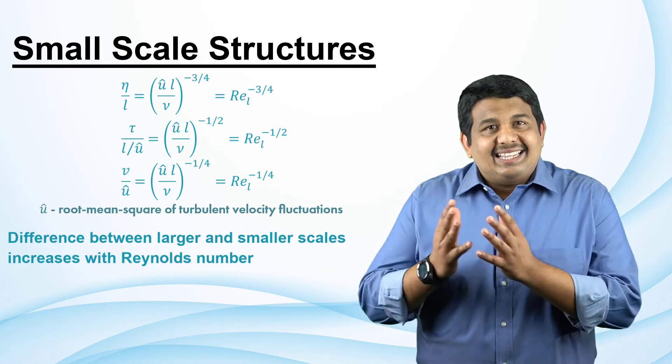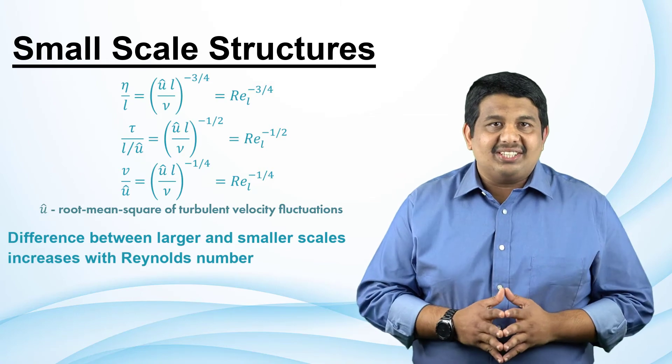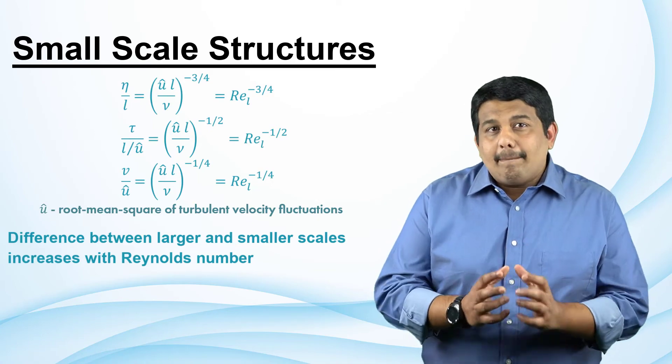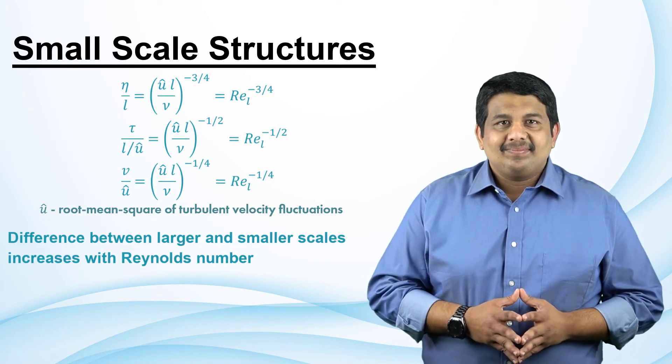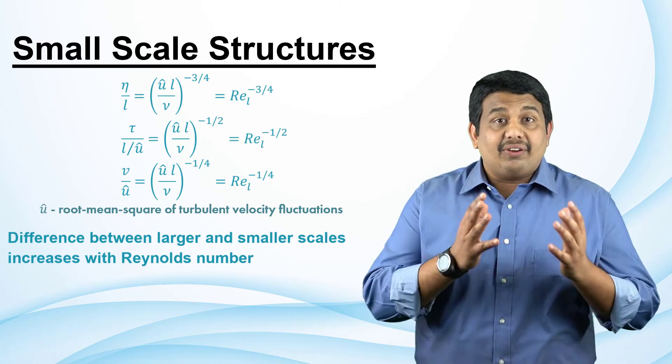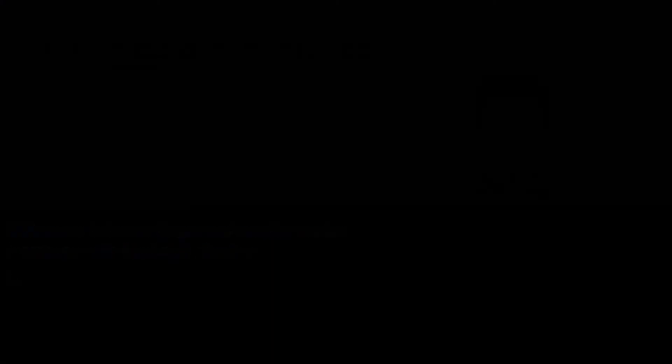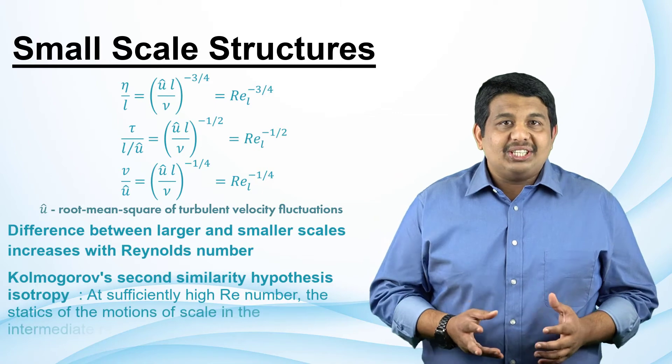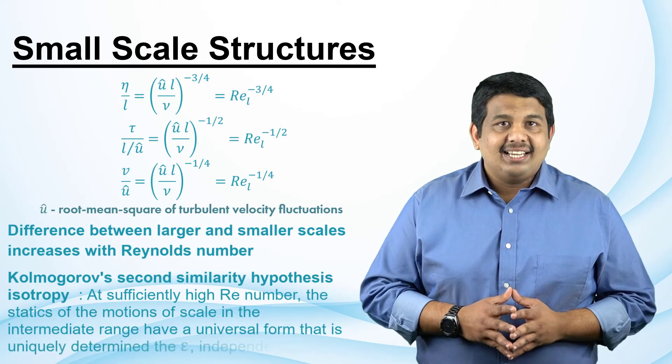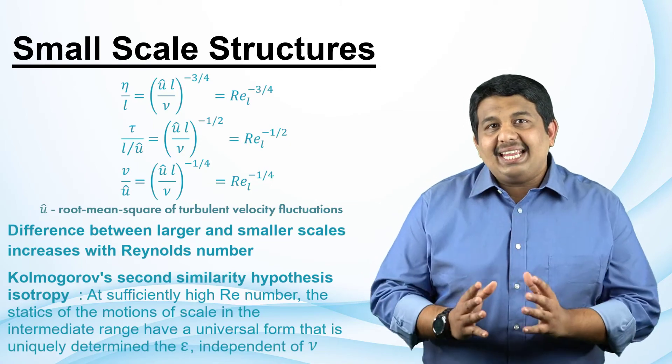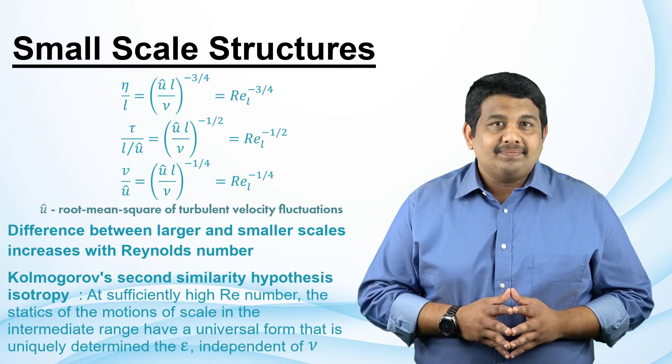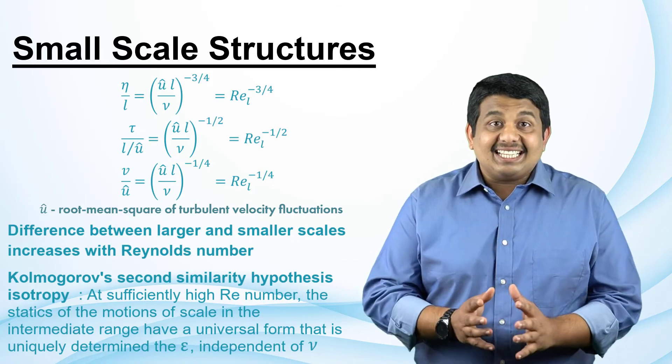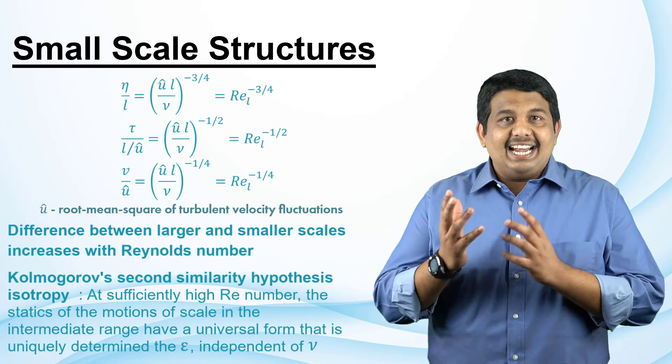Furthermore, there will be a range of intermediate structures which are small compared to the large scale structures but are large compared to the small scale structures. This was the basis for Kolmogorov's third hypothesis. At sufficiently high Reynolds number, the statistics of the motions of scales in the intermediate range have a universal form that is uniquely determined by the dissipation rate and is independent of viscosity. In other words, viscosity does not impact the dynamics of these intermediate range structures.